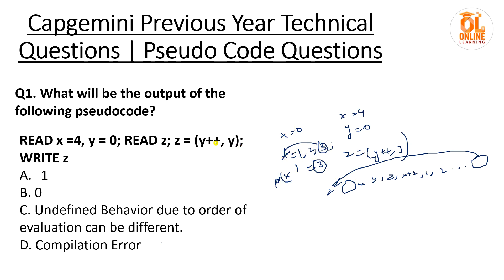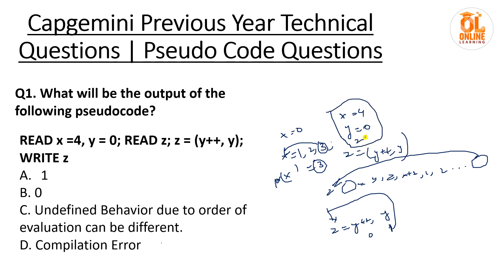So here z equal to y plus-plus comma y: previously y is 0. Because of y plus-plus — it is a post-increment — whenever y is visited again it will be incremented to 1. So z equal to y plus-plus comma y gives 0 at first, then y becomes 1, and the rightmost value 1 is copied to z. So we have x equal to 4, y equal to 0, z equal to 1, and the final statement is write z. So z value is 1 — that is option A.